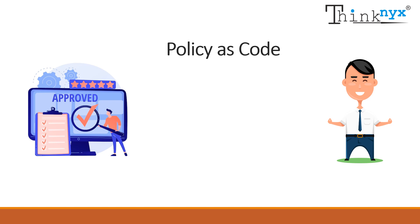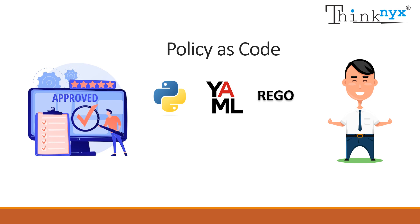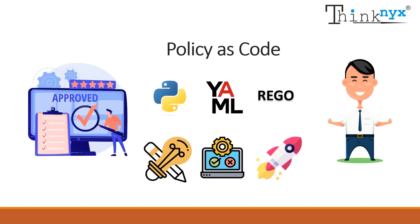Policy as code is the principle of writing code in a high-level language like Python, YAML, or Rego for controlling, managing, and automating the process. The specific language usually depends on which policy as code management and enforcement tools we are using. Policy as code can be applied to all phases of development such as design, testing, deployment, etc.